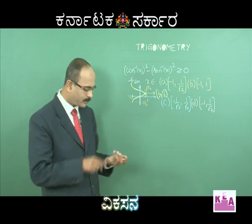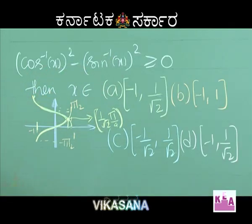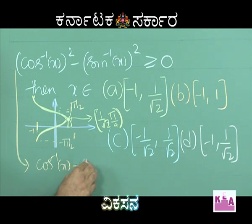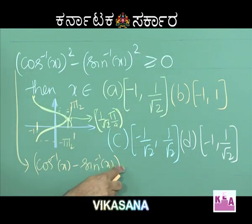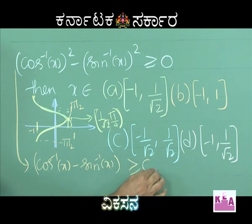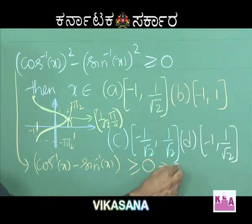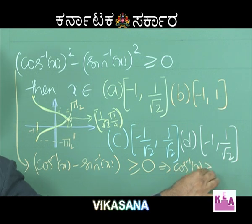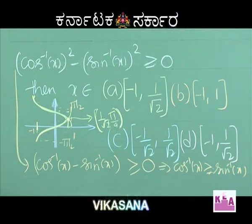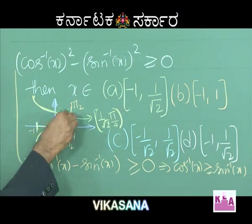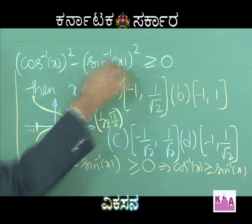Knowing this, the problem asks: where is cos inverse of x whole squared minus sin inverse of x whole squared greater than or equal to 0, i.e., cos inverse of x greater than or equal to sin inverse of x? Using a squared minus b squared equals (a minus b)(a plus b): cos inverse of x minus sin inverse of x, times cos inverse of x plus sin inverse of x equals pi by 2. So this becomes pi by 2 times (cos inverse of x minus sin inverse of x) greater than or equal to 0. Since pi by 2 is positive and constant, cos inverse of x is greater than or equal to sin inverse of x. Therefore x lies from minus 1 to 1 by root 2, and option A is correct.